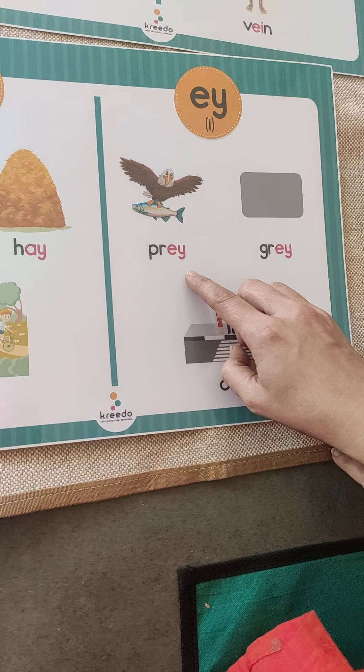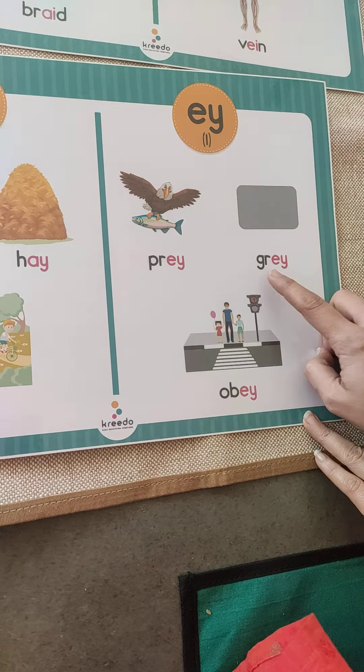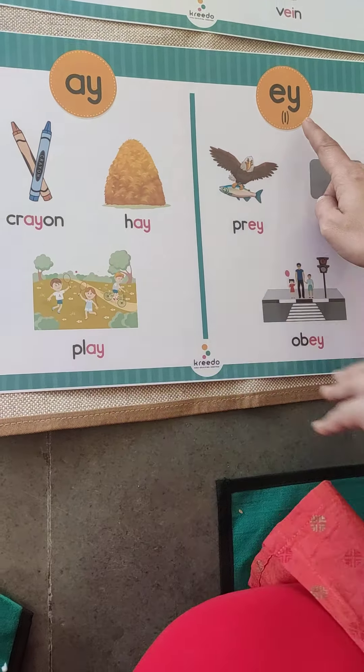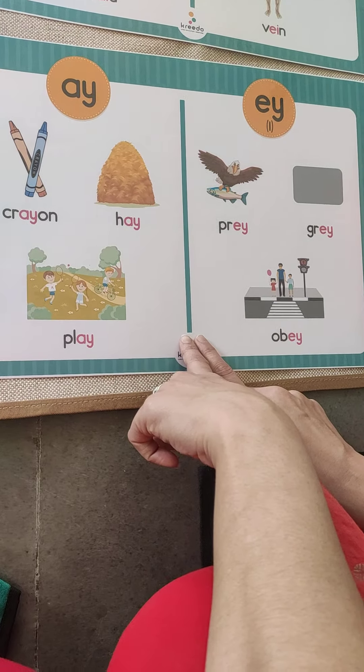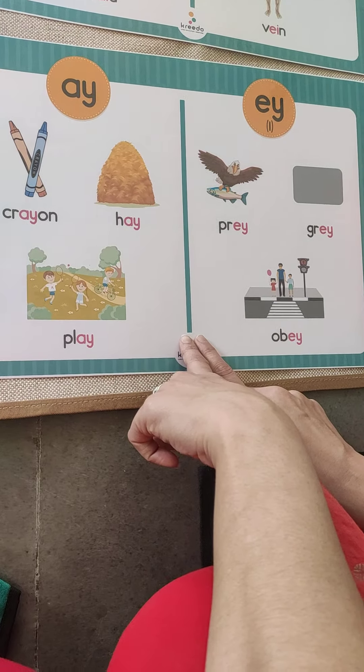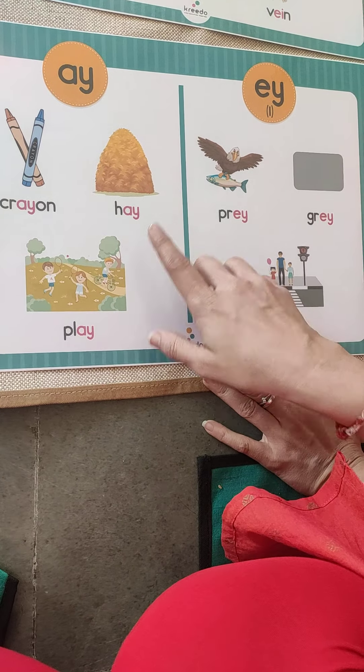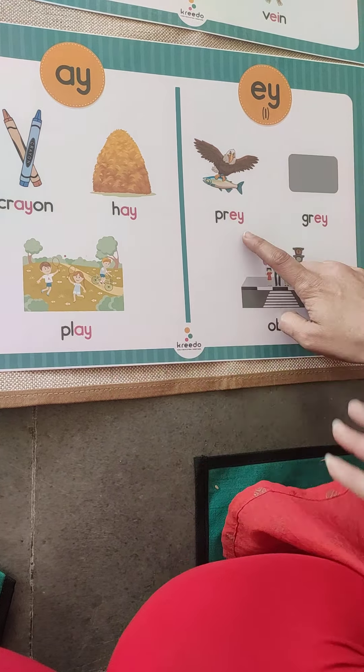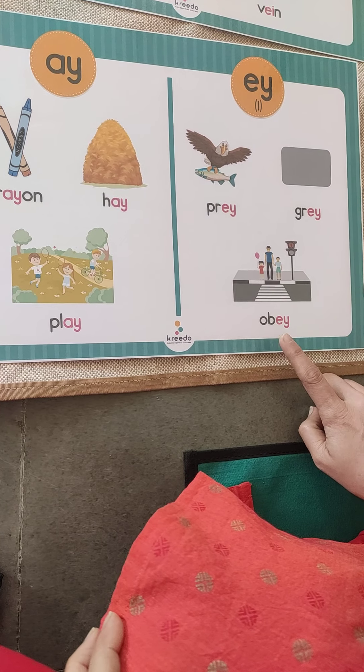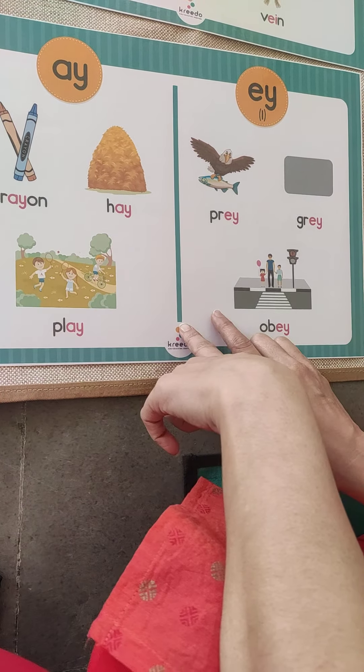Next are EY words. Pray, gray, and obey. Obey kya hota hai? Maan na. Traffic rules ko maan rahe hai. Pray kya hota hai? Shikar — you say prey. Gray is the color. When you say AY and EY, both have the same sound — A. Crayon, hay, play, pray, gray, obey — dono ka similar sound which is A.